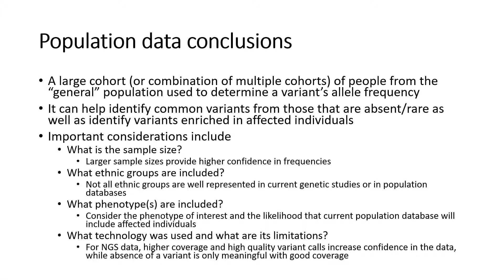To review: population data is genomic variant data from a large cohort of people used to understand a variant's frequency in the general population. It can help differentiate common variants from those that are absent or rare, as well as identify variants enriched in affected individuals. Larger sample sizes provide higher confidence in allele frequency estimates. Not all ethnic groups are well represented in current genetic studies or population databases. Consider the phenotype of interest and the likelihood that current population databases could include affected individuals. For NGS population databases, higher coverage and high quality variant calls increase confidence in the data, while absence of a variant is only meaningful with good coverage.